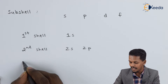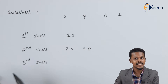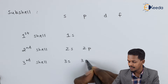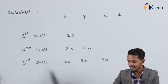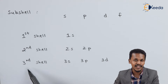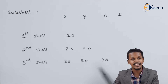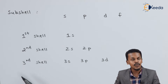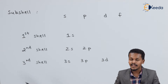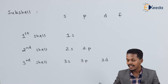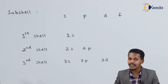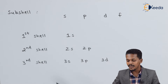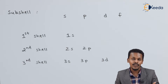The third shell has sub-shells 3S, 3P, and 3D — so there are three sub-shells in the third shell. The sub-shells go on increasing as the number of shells increases. In the fourth shell we get four sub-shells: S, P, D, and F. In the fifth shell we would get five sub-shells: S, P, D, F, and G. So this is how we have discussed sub-shells and concluded that a shell is composed of sub-shells.